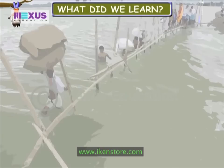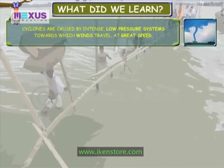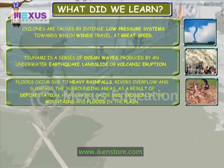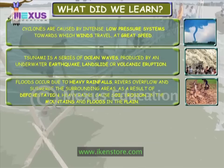What did we learn? Cyclones are caused by intense low-pressure systems towards which winds travel at great speeds. Tsunamis are a series of ocean waves produced by an underwater earthquake, landslide or volcanic eruption. Floods occur due to heavy rainfalls, rivers overflow and submerge the surrounding areas. As a result of deforestation, heavy rains cause soil erosion in the mountains and floods in the plains.